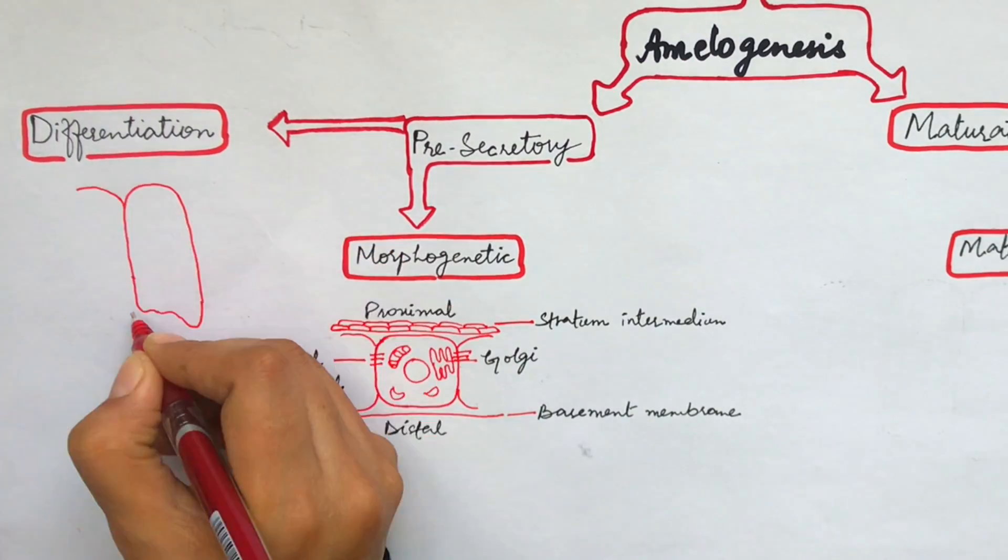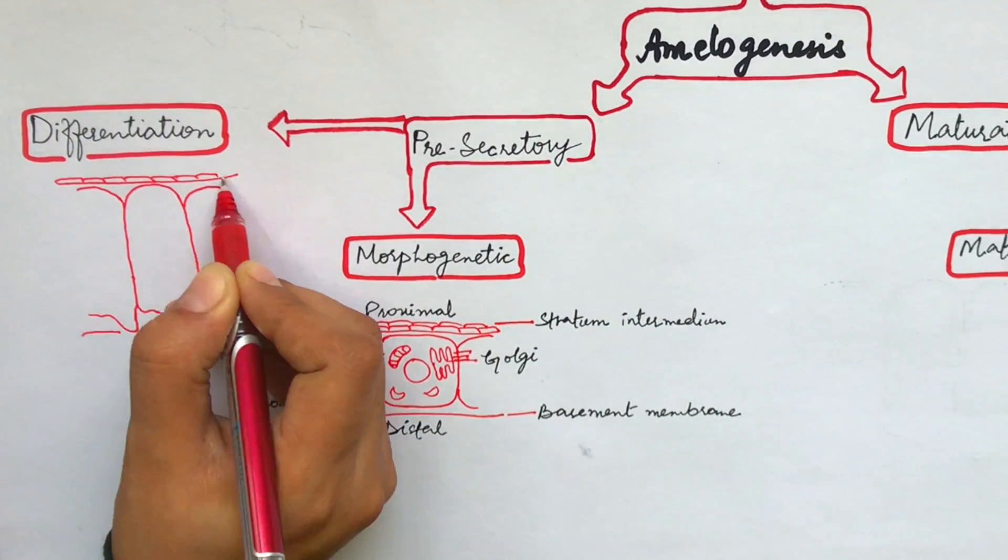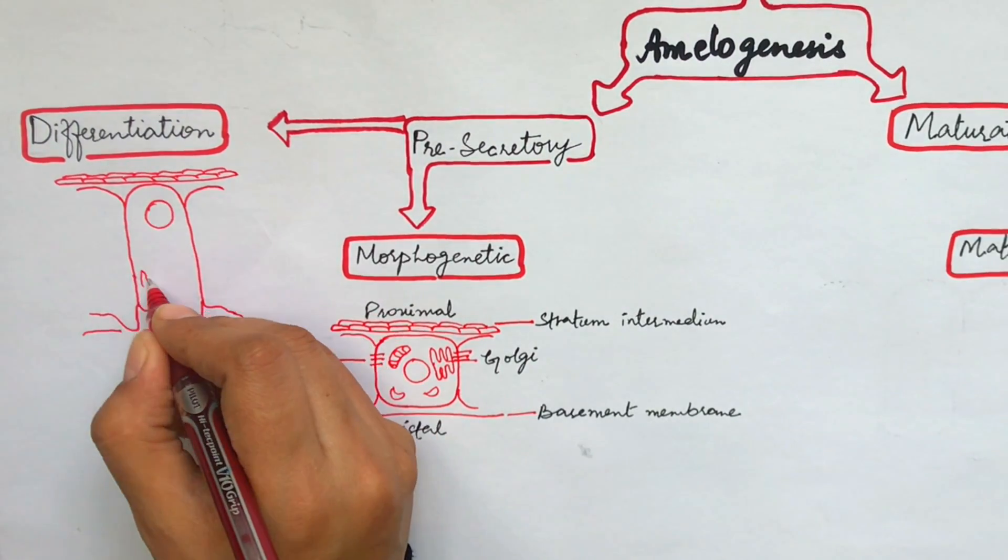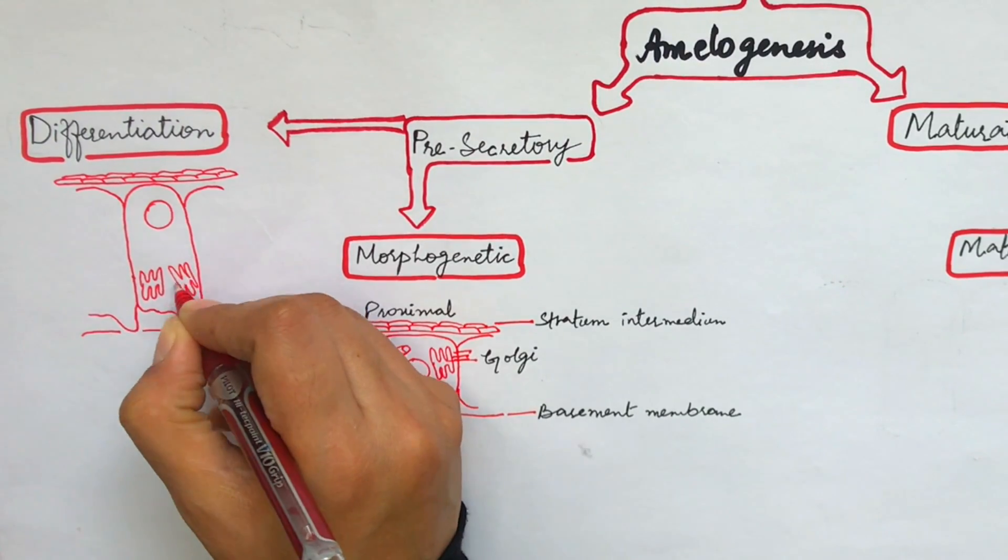In the differentiation phase, as the name implies, the cells of the inner enamel epithelium are differentiated into ameloblasts. The cells become tall columnar and the nucleus of the cells shifts proximally towards the stratum intermedium.